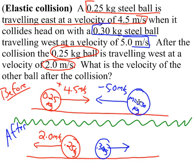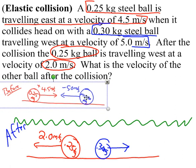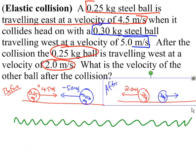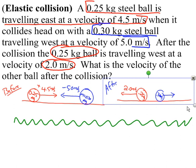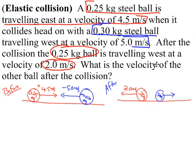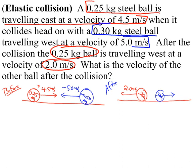Before I move on, I'm going to take my before situation and slide it to the left, and my after situation to the right, with a dividing line to keep them separate. This allows me to look independently at what I have for momenta before and after the collision. I have my before and after situations with all the information that will allow me to use the law of conservation of momentum to find my unknown.